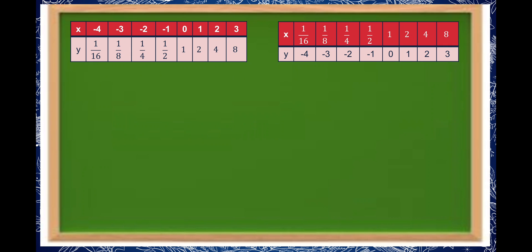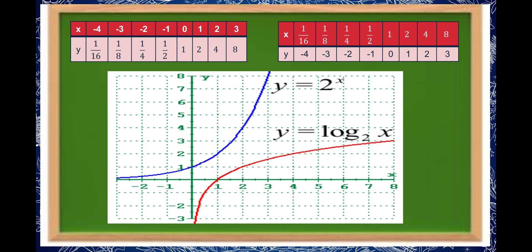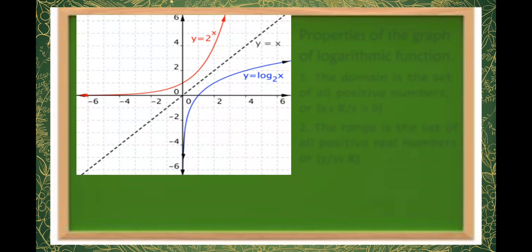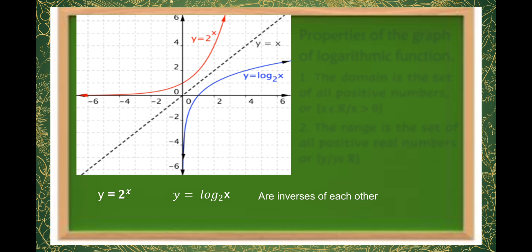Let's try to graph these two tables of values. The blue graph is y is equal to 2 raised to x, and the red graph is y is equal to log of x to the base of 2. You can observe that the two graphs are mirror images of each other. So y is equal to 2 raised to x and y is equal to log of x to the base of 2 are inverses of each other, and their graphs are reflections of each other on the line y is equal to x.